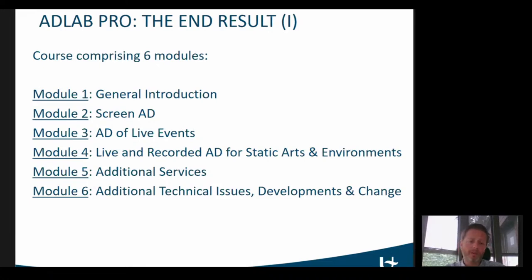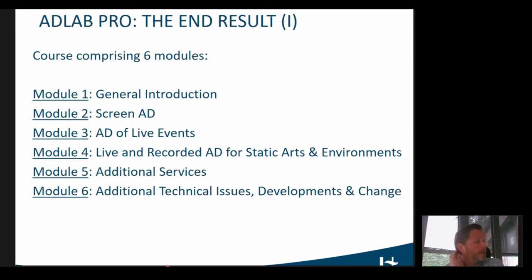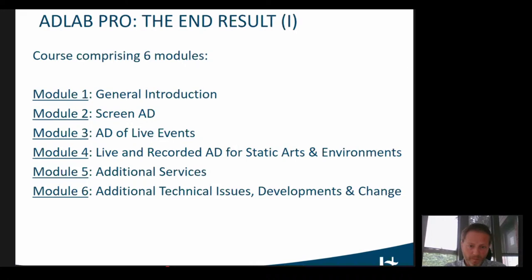Finally, in the last module, specific technical issues and new developments are tackled. The units there focus on, for example, translation of existing audio descriptions — both human translation and machine translation — but also other ways of making productions accessible, moving more towards accessible filmmaking.